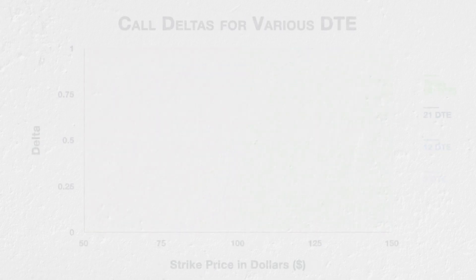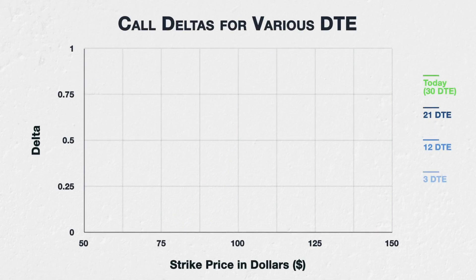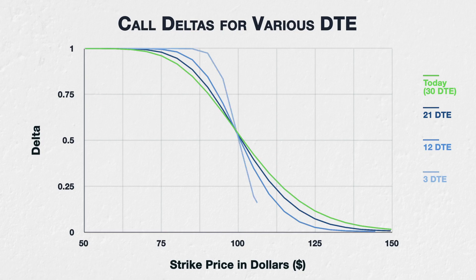We can also view this relationship between DTE and delta by taking a similar look at the delta of multiple option strikes with different times left until they expire. This time the asset price is fixed at $100, still with 60% IV. And instead of looking at a single $100 call option, we are looking at all call options with strike prices from $50 to $150.